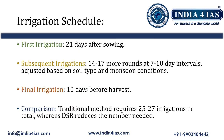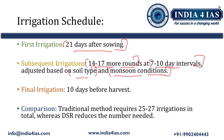Coming to the irrigation schedule of direct seeding of rice, the first irrigation is done 21 days after sowing. Subsequently, around 14 to 17 more rounds of irrigation are done at 7 to 10 day intervals. This irrigation is adjusted based on soil type and monsoon conditions. If rainfall is sufficient, the number of irrigation rounds varies. The final irrigation is done 10 days before the harvest of the paddy.